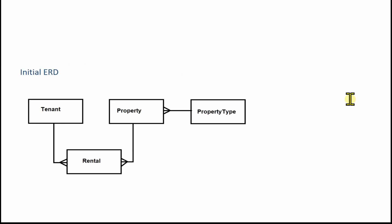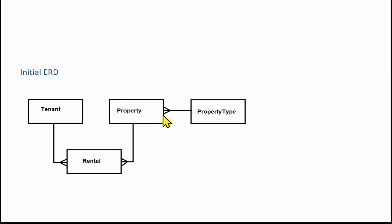We've got an initial ERD with our four entities: property type, property, rental, and tenant. The relationships are: a property type can be used many times on a property, but a property has only one property type. A property can have many rentals, but a rental is for only one property. A tenant can have many rentals, but a rental is for only one tenant.